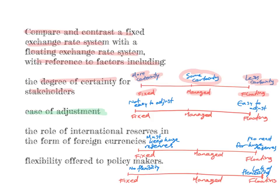The second factor is ease of adjustment. A fixed exchange rate system is not easy to adjust — the economy doesn't adjust automatically to external shocks. For example, if international oil prices rise causing a negative supply shock, the fixed exchange rate makes the economy inflexible. Normally, floating exchange rates act as a buffer against external shocks: if there's a balance of payments deficit, the currency value falls, which increases exports and brings the balance of payments back to balance or surplus. Floating exchange rate systems allow the economy to adjust more easily to external shocks. Managed exchange rate systems are somewhere in the middle.